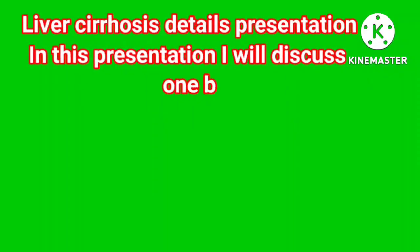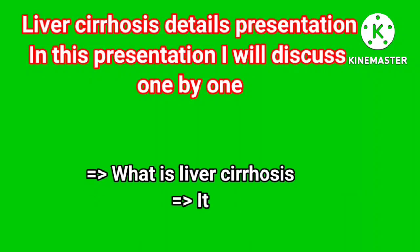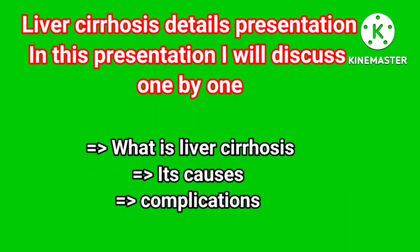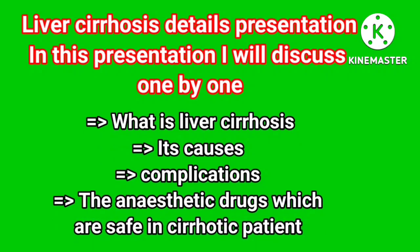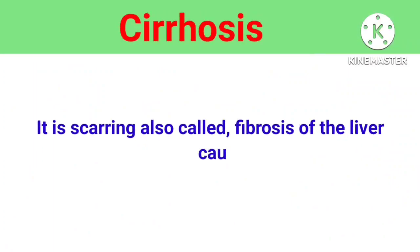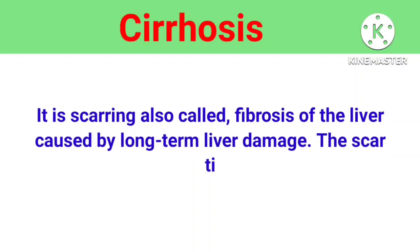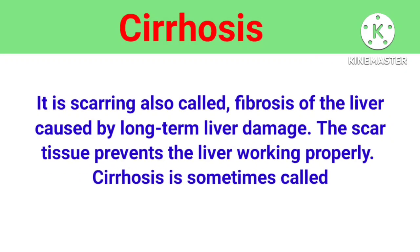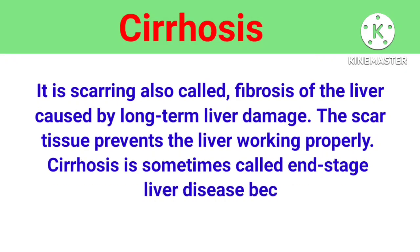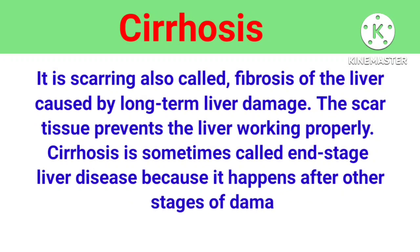In this presentation I will discuss what is liver cirrhosis, its causes, complications, and the anesthetic drugs which are safe in cirrhotic patients. Cirrhosis is scarring, also called fibrosis, of the liver caused by long-term liver damage. The scar tissue prevents the liver from working properly. It is sometimes called end-stage liver disease because it happens after other stages of damage from conditions that affect the liver.